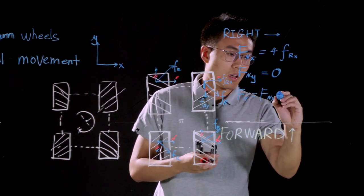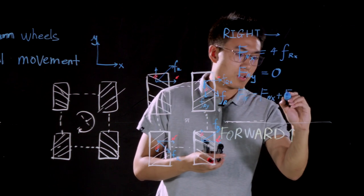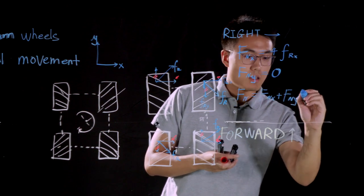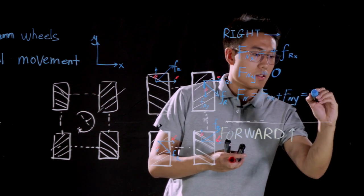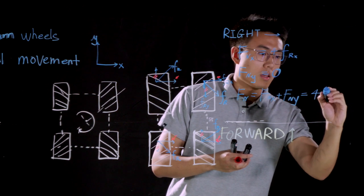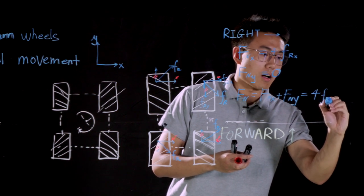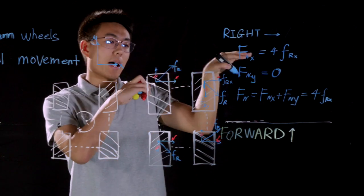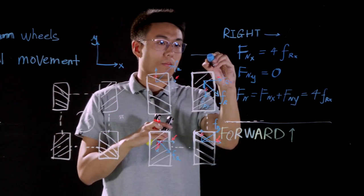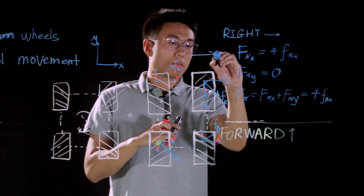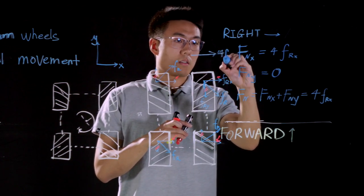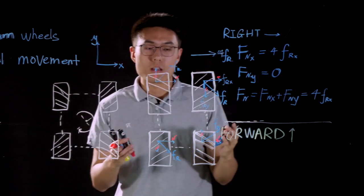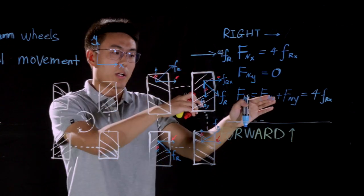Then we can combine these two net forces to derive the overall net force. That is, net force equals to Fnet,X plus Fnet,Y, that is equal to 4FR,X, which means the overall net force is pointing to right. And that explains why our S1 can move in right direction.